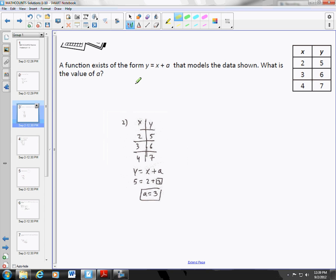The next problem: a function exists in the form y equals x plus a that models the data shown. What is the value of a? So first thing you do is write down the table, and then we have to figure out a way to get from x to y. And we know it's by addition. See the plus a? So 2 plus what gives you 5? 2 plus 3. So a is equal to 3.